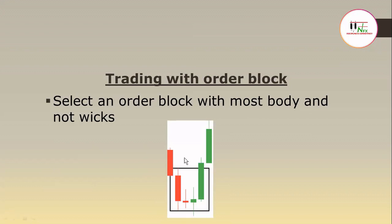When selecting an order block, choose the one with the most body and not a weak candle. So if you see a structure that has many wicks in between, and on the left you see the order block — the bearish candle in this case for the bullish order block — you'd be looking for the last bearish candle. Sometimes the low can be below this order block. You can choose the candle with the most body as your order block and not the wicks. The same applies to the bearish order block.